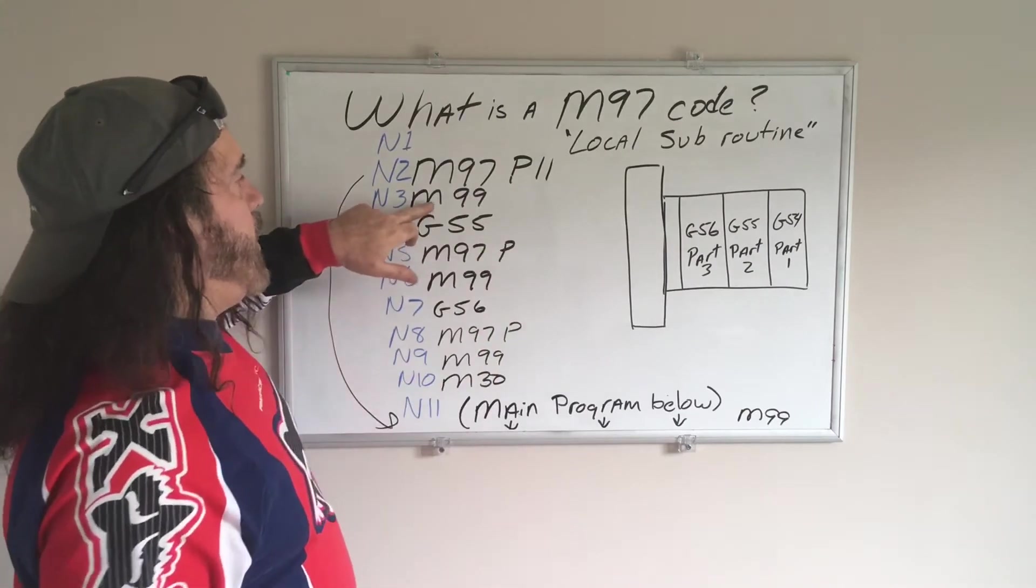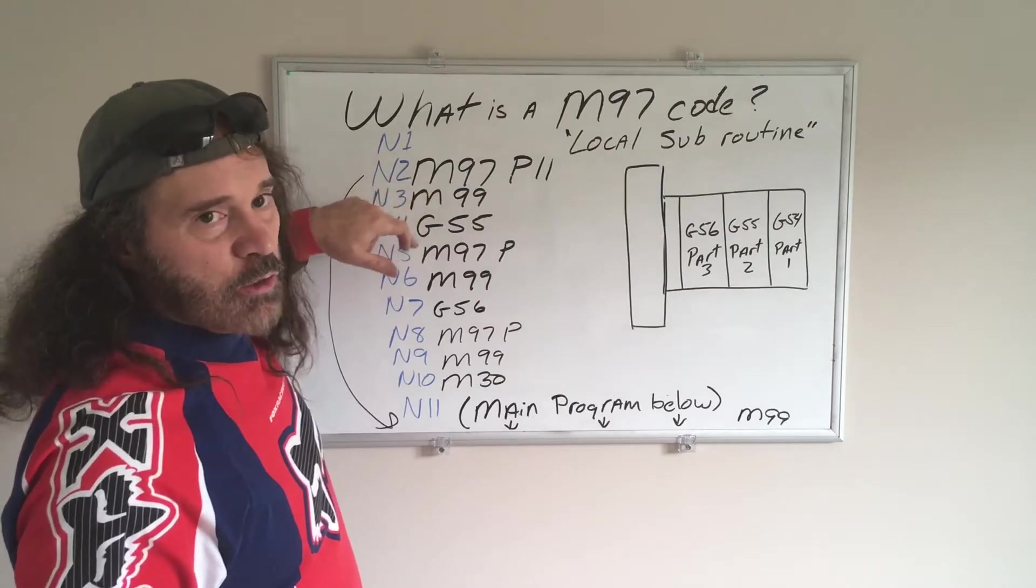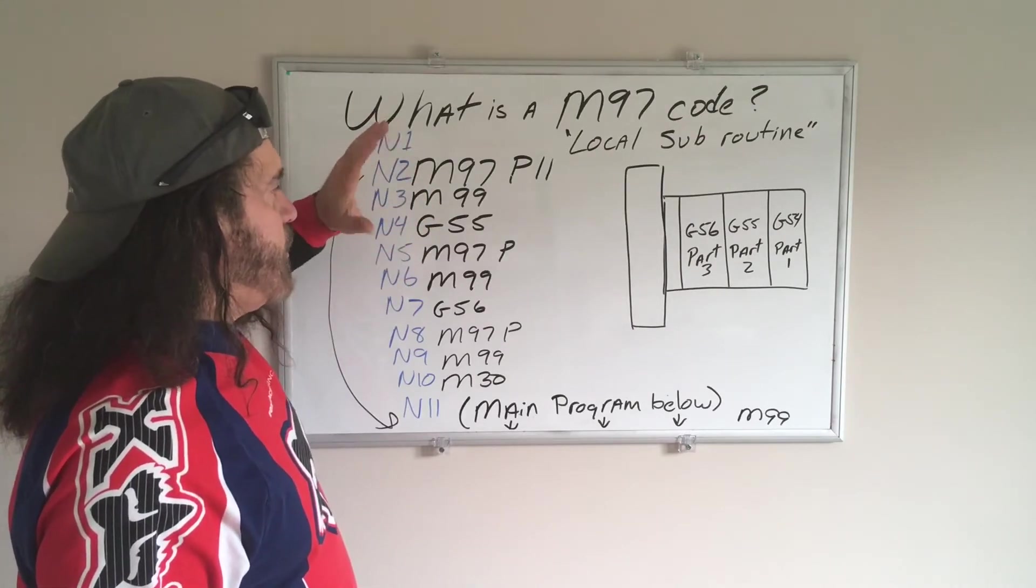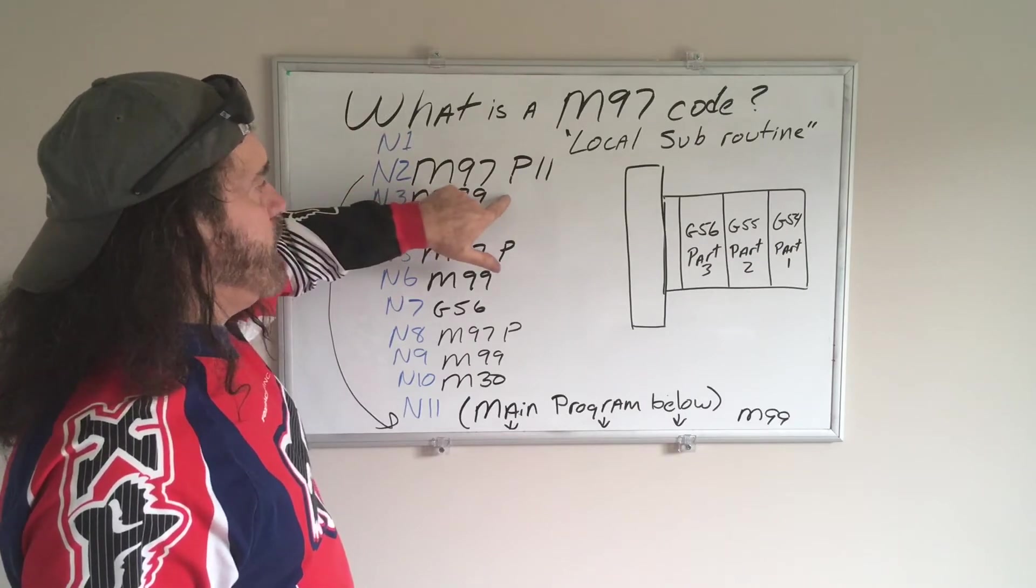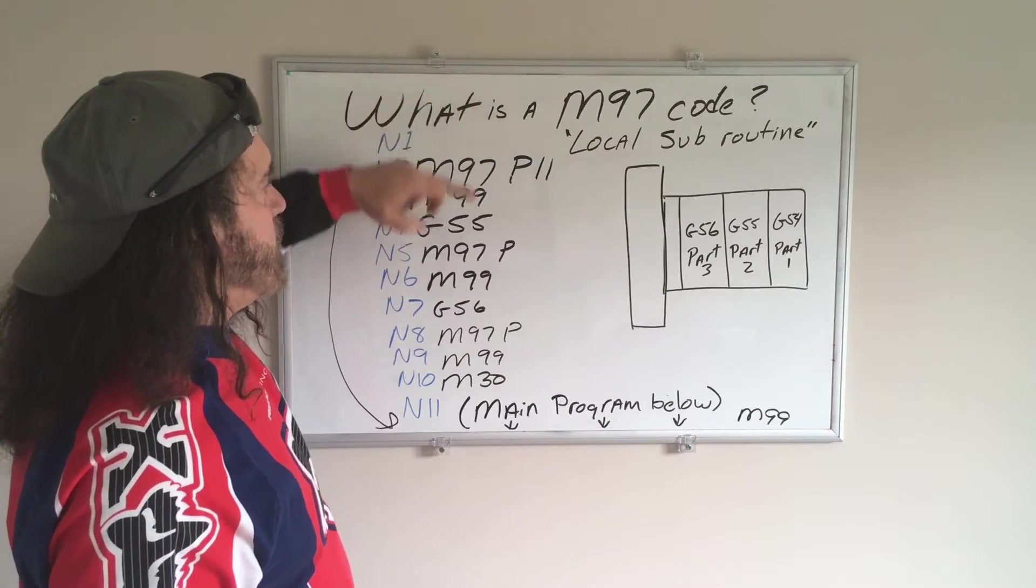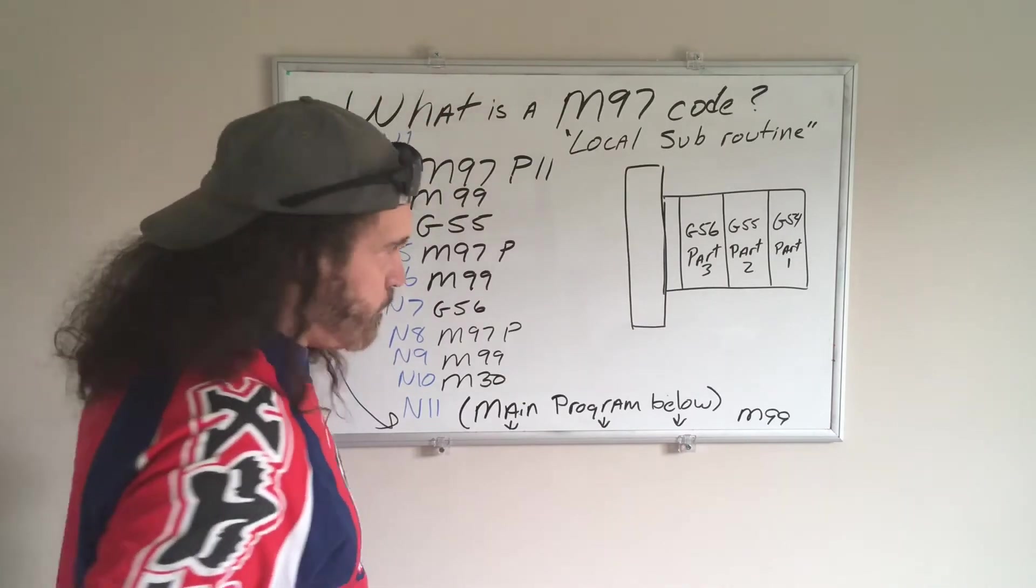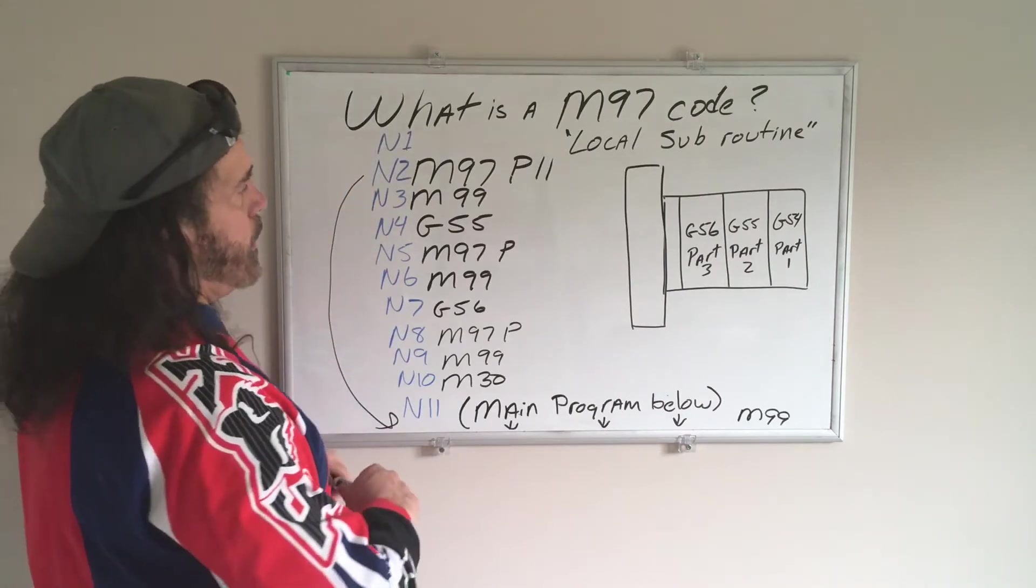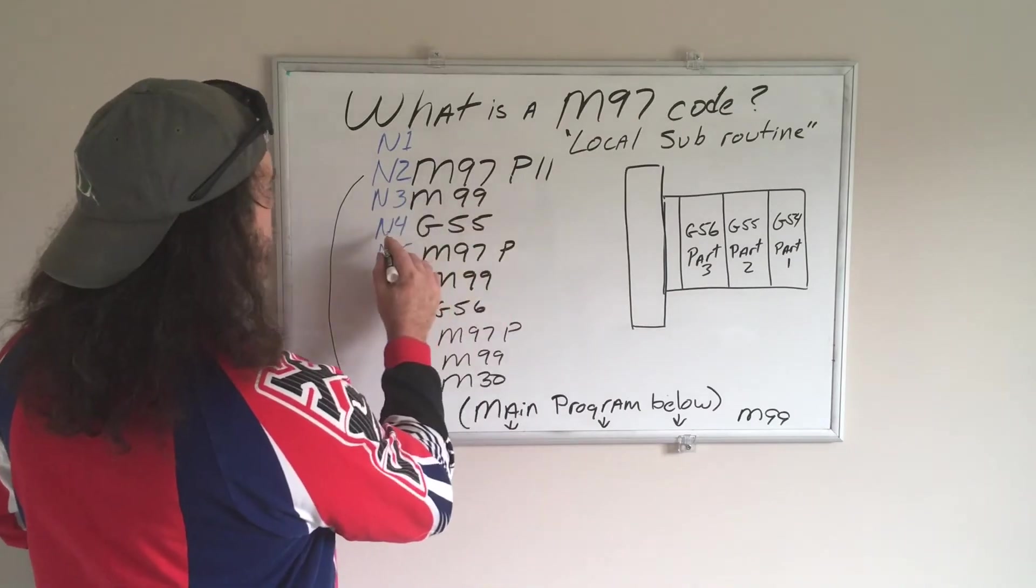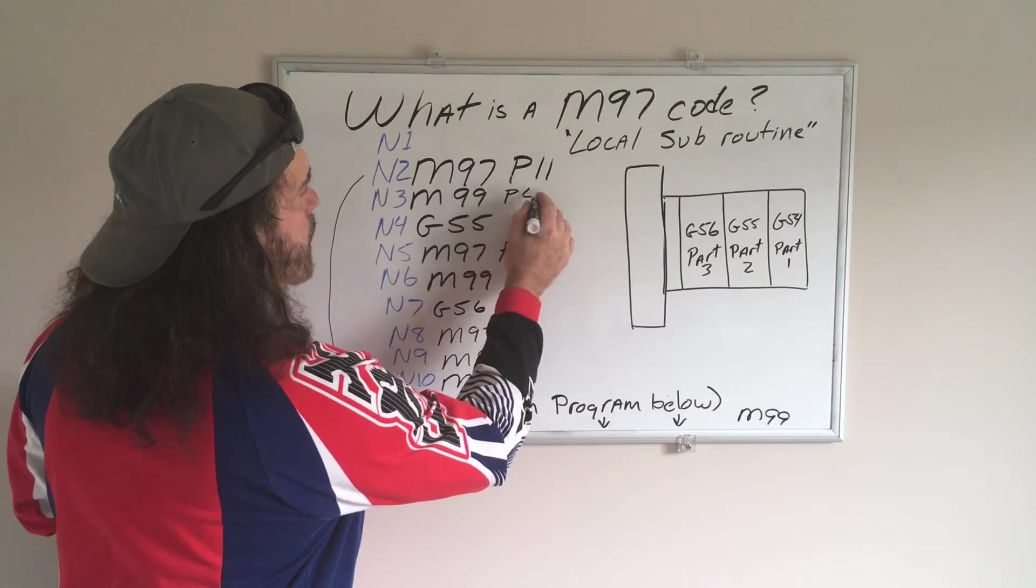And we have an M99. Well, we all know that means it's a looping cycle. But M99 can be treated in a couple of different ways, where if you don't give it a value right here, it's just going to rewind back up to the top and just repeat this whole thing. We don't want to do that. So I wanted to jump down to my next part. So we're on line number 4. So you're going to put a P4.